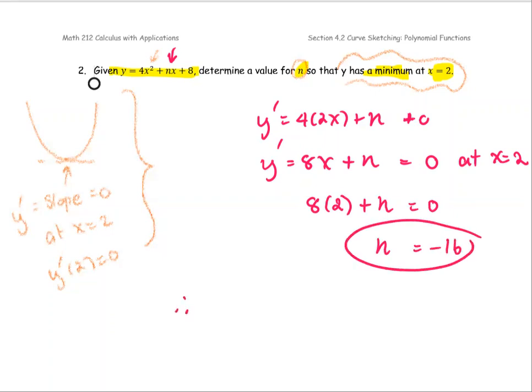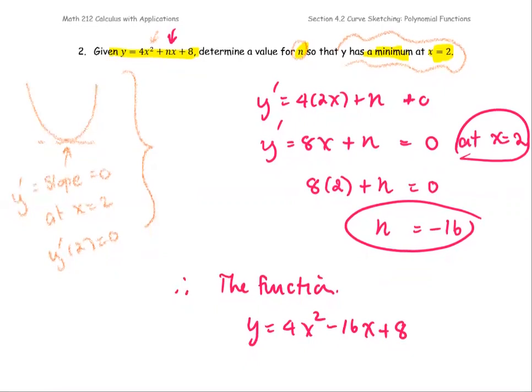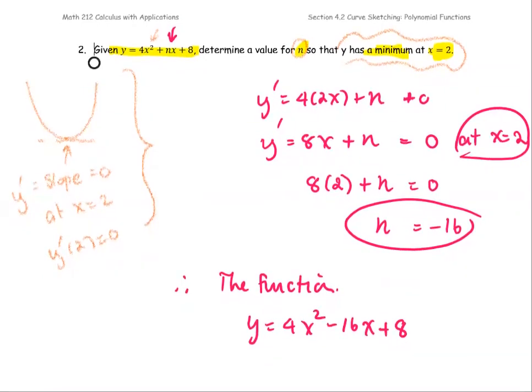Then put them back together. So we have the function in the full version, y equals 4x squared minus 16x plus 8. And at x equals 2, the function y will have the minimum value or the minimum point of the graph.